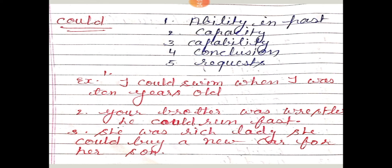Another example: 'Your brother was a wrestler. She was a rich lady. She could buy a new car for her son.' Here 'could' shows only past tense. 'Can' past tense is 'could.' Hindi meaning of 'could' is 'sakta tha,' and 'can' means 'sakta hai.'